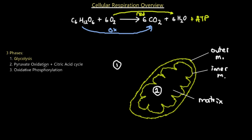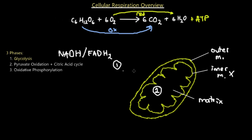In the matrix, pyruvate oxidation occurs, followed by the citric acid cycle. The products of pyruvate oxidation are the reactants for the citric acid cycle. Once the citric acid cycle produces its products — including NADH and FADH₂, our electron carriers — these are used by oxidative phosphorylation on the mitochondrial inner membrane, through the electron transport chain, to produce lots and lots of ATP.